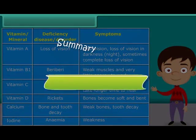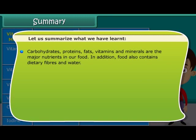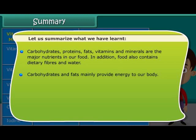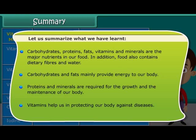Summary. Let us summarize what we have learned. Carbohydrates, proteins, fats, vitamins, and minerals are the major nutrients in our food. In addition, food also contains dietary fibers and water. Carbohydrates and fats mainly provide energy to our body. Proteins and minerals are required for the growth and maintenance of our body. Vitamins help us in protecting our body against diseases.